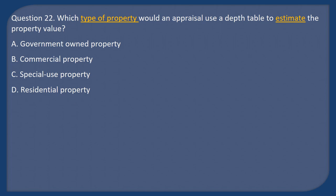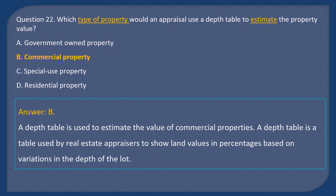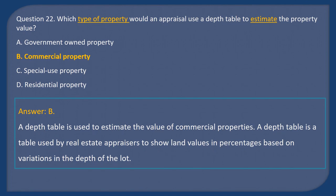Question 22: Which type of property would an appraiser use a depth table to estimate the property value? A) Government-owned property, B) Commercial property, C) Special use property, D) Residential property. Answer: B. A depth table is used to estimate the value of commercial properties. It is a table used by real estate appraisers to show land values in percentages based on variations in the depth of the lot.